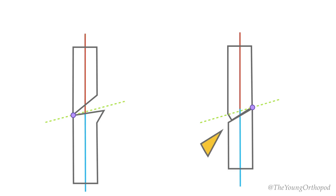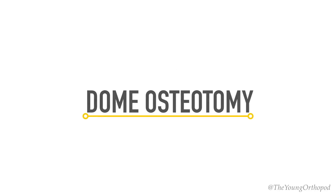A bump in the concavity may arise as a consequence of inclination of the osteotomy site with opening wedge corrections, and as a defect with closing wedge corrections. An alternative to the straight cut osteotomy is a circular-shaped dome osteotomy.